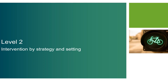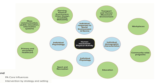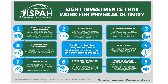Let's move on to the next layer of the map: interventions by strategy and setting. Here we've added eight additions to the map in light green. They show intervention points in the system through strategies — for example, mass communication — and settings — for example, schools, workplaces, and healthcare. These intervention points are also known as the eight investments that work for physical activity, as recognised by the International Society for Physical Activity and Health (ISPA). There is expert consensus and compelling evidence that these are the best investment areas to create more active populations.